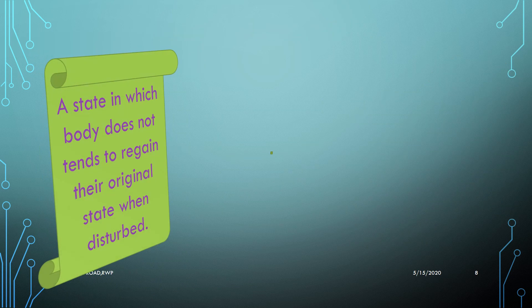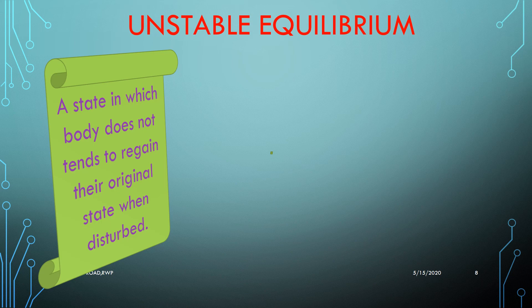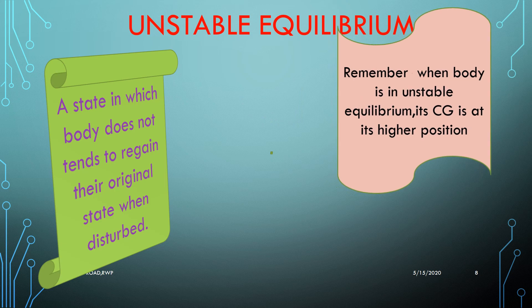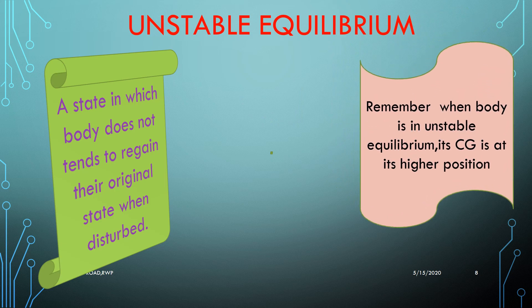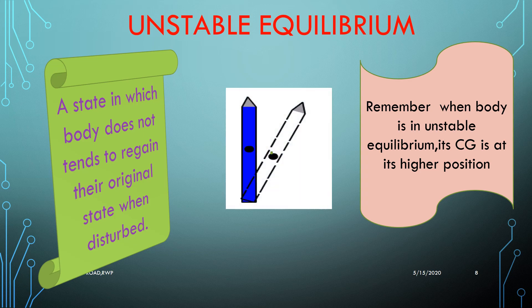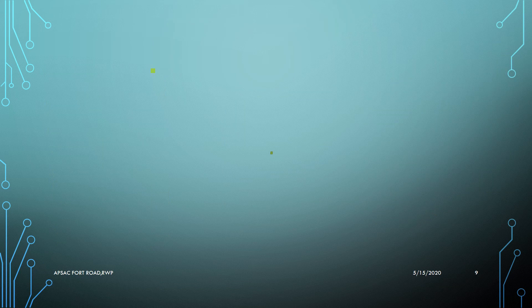If a body does not return to its previous position when set free after the slightest tilt, the body is said to be in the state of unstable equilibrium. In unstable equilibrium, the center of gravity of the body is at its highest position. If the body topples over its base, its center of gravity moves to a lower position and the body is unable to retain its previous position. As you can see, this pencil is in a state of equilibrium placed on a smooth surface; if we slightly tilt it, the center of gravity will be lowered and it will be unable to regain its initial position.